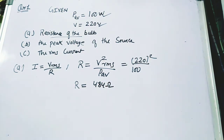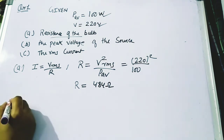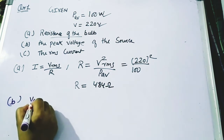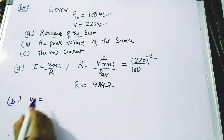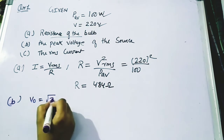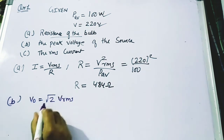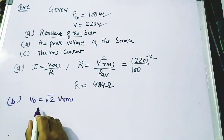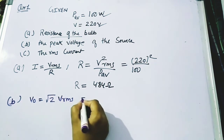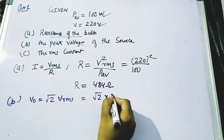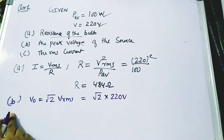The next part asks for the peak voltage of the source — the maximum value of voltage. We know that V₀ = √2 × V_RMS = √2 × 220 volts. This is the answer for the peak voltage.